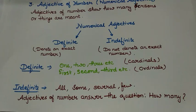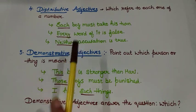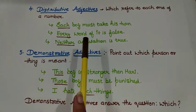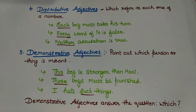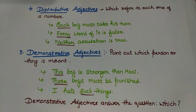Adjective of number answers the question 'how many' — like, how many mangoes? Two mangoes. The fourth one is distributive adjective. Distributive adjective refers to each one of a number. For example: 'Each boy must take his turn' — I am talking about every boy present in the class. 'Every word of it is false' — means every single word. 'Neither accusation is true' — means not a single one.